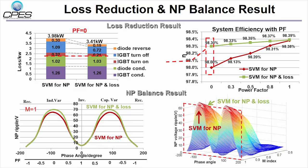The proposed method sacrifices a little NP voltage at low power factor to gain loss reductions. But for high power factors, the NP voltage is rarely sacrificed. So the proposed method can achieve good NP balancing as well as reduce system loss.